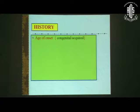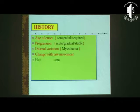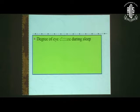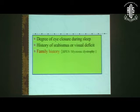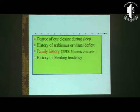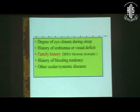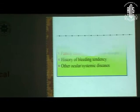In history: age of onset, progression, diurnal variation, change with jaw movements, and history of previous ocular surgery. Along with that, family history — such as in cases of BPS or myotonic dystrophy — and history of bleeding tendencies has to be ruled out.